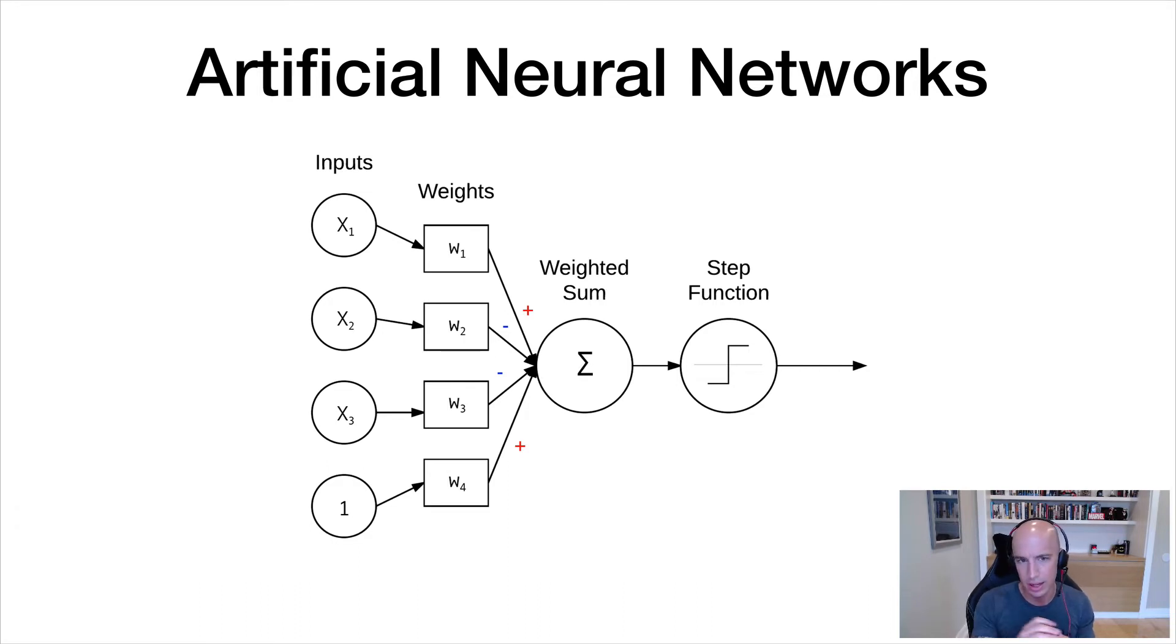So these inputs are then connected to weights. These are essentially the neurons of the neural networks. And we could stack these neurons on top of each other to learn deeper and richer patterns inside our data. But at the end of the day, these weights are just values. They could be positive or they could be negative. And we're going to multiply these weights with their inputs, sum all of that together, and then pass it through this step function.